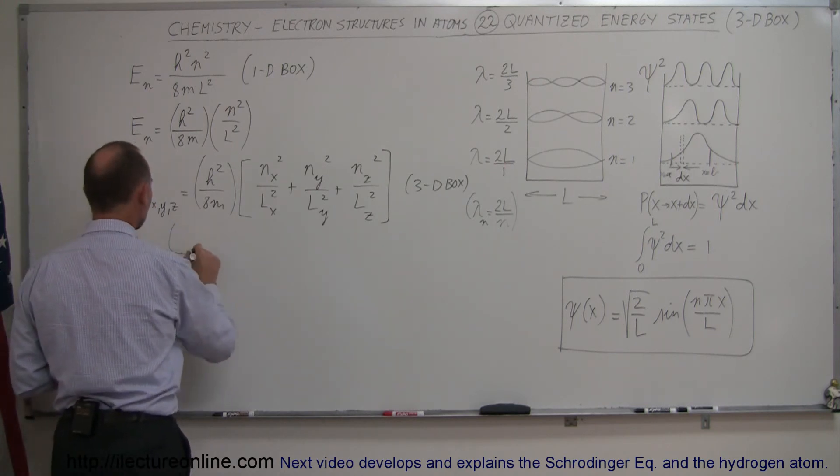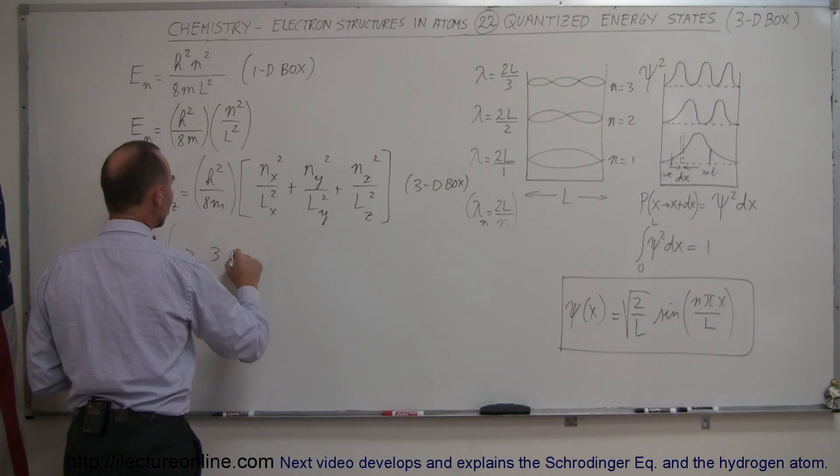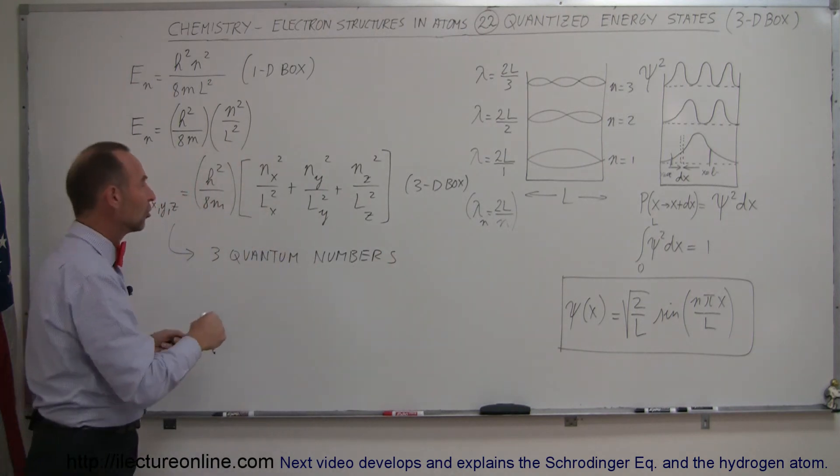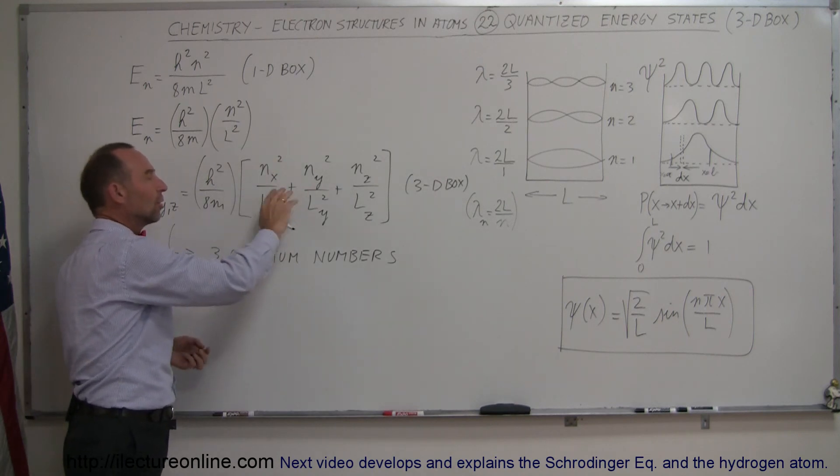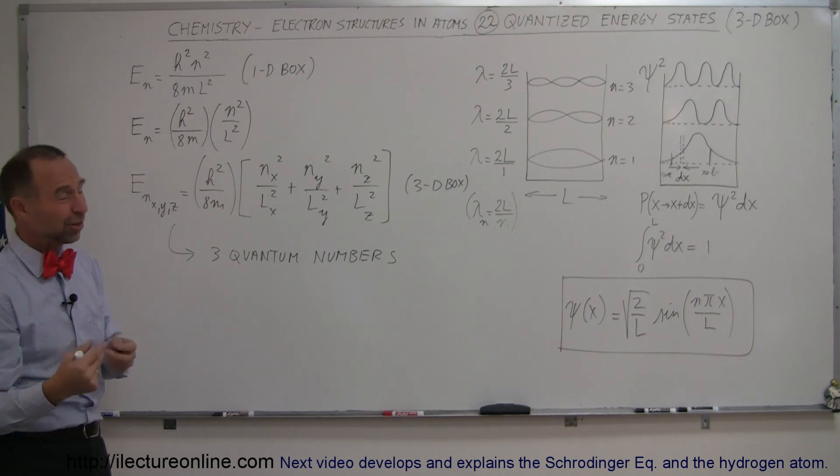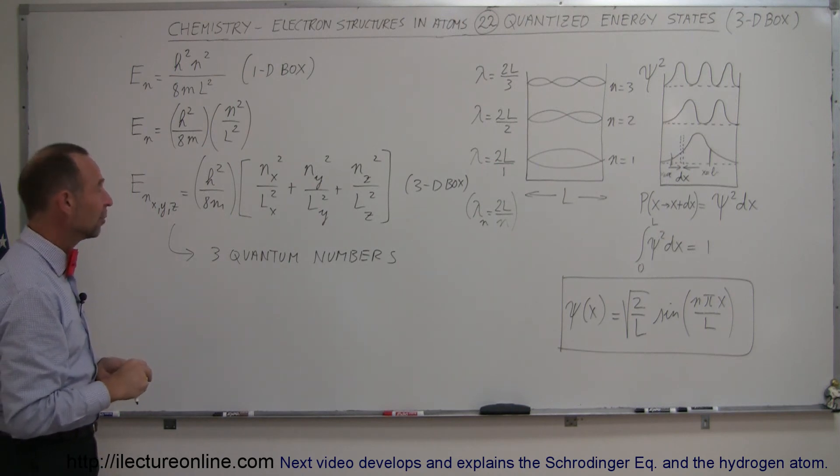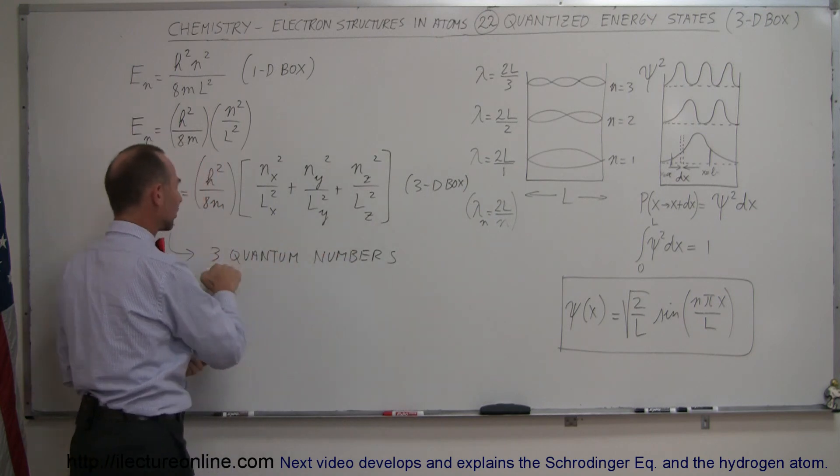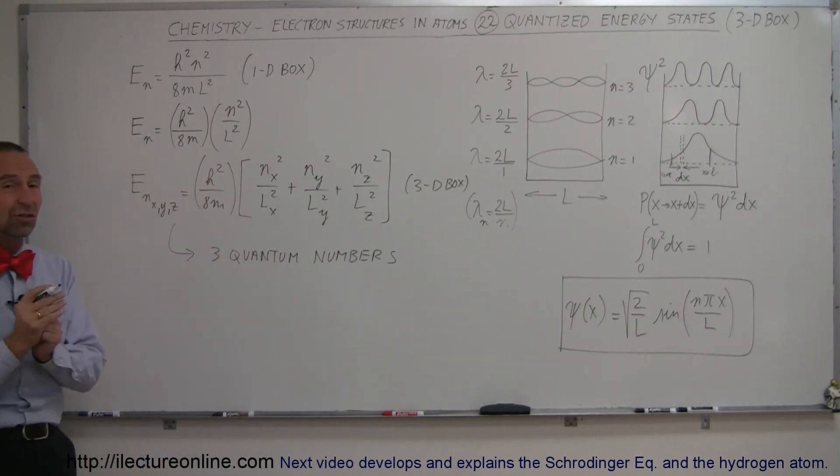So what this requires us to do is come up with three quantum numbers which will relate the structure in that dimension and the energy in that dimension. So even though this is a very theoretical setup and there's no such thing in nature as the three-dimensional box, so to speak, we do realize now that since we have three dimensions, we're going to have to come up with three different quantum numbers that define the existence of an electron in three-dimensional space.